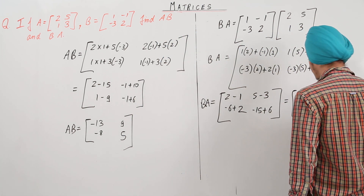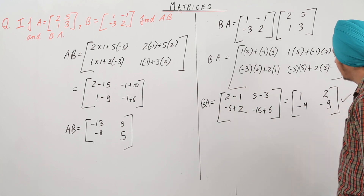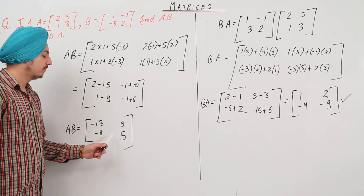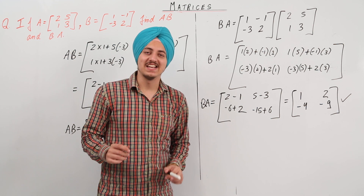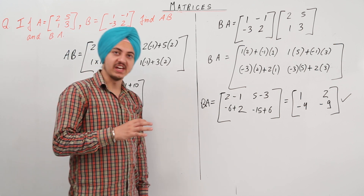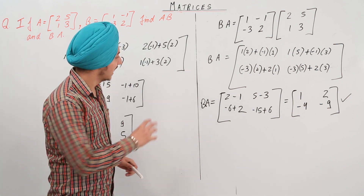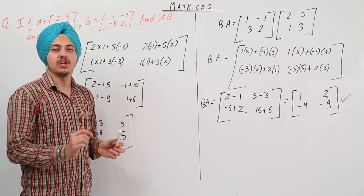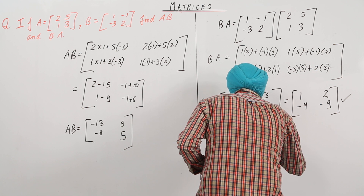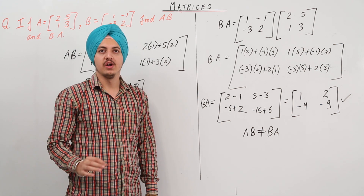So BA is equal to [1, 2; -4, -9], and AB is equal to [-13, 9; -8, 5]. From this we realize that AB is not always equal to BA. AB equals BA only in special cases for matrices that follow the commutative property. For all other matrices, AB will never equal BA.